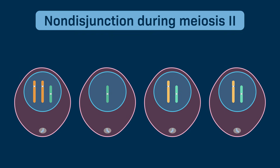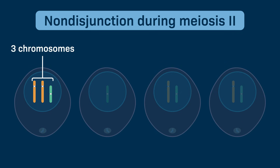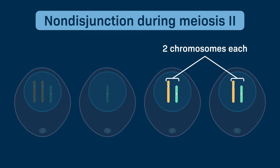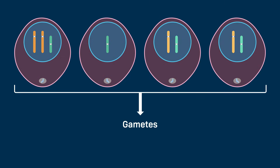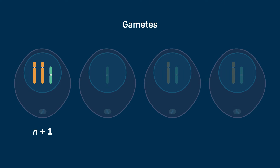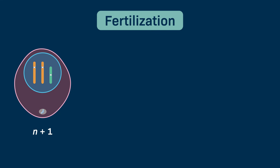The four cells that result following non-disjunction in meiosis 2 have different numbers of chromosomes. In our example, one resulting cell has a total of three chromosomes, one has only one chromosome, and two each have two chromosomes. If these four resulting cells go on to form gametes, the gametes will also vary in the number of chromosomes — one gamete would be n plus 1.